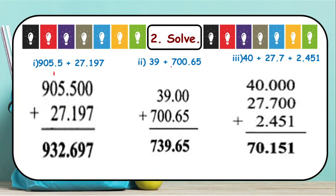Then we have 39 plus 700.65. Here no decimal part is there in 39. So you will arrange the decimal and since after the decimal two digits are there, just add two zeros after the whole number. This becomes 39.00 plus 700.65. After adding we get 739.65.